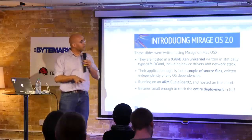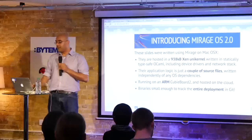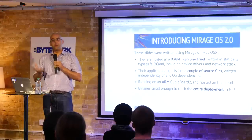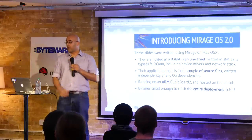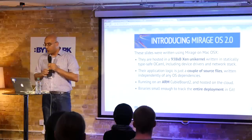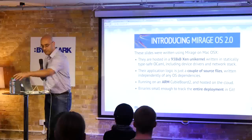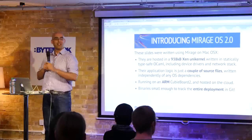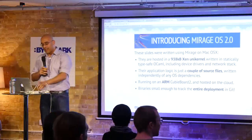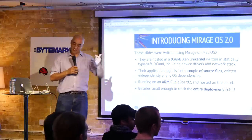All of these slides — everything I'm showing you here — has actually been written using Mirage. The entire stack that this is being served off is about a one-megabyte unikernel running under Xen. Xen has now been ported to the ARM platform — is Ian Jackson in the room? Yes, there he is. It's his fault, along with Ian Campbell. The Xen development team has done a great job.